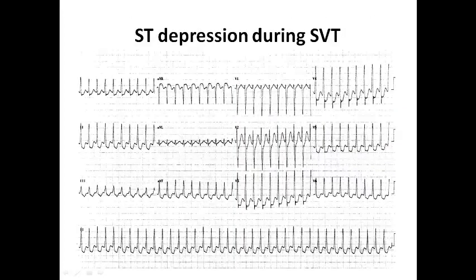Here we can see an ECG showing regular narrow complex tachycardia, consistent with SVT, and the heart rate is very high at about 180 or 190, as the RR interval is less than 2 large squares. We can see significant ST depression in chest leads from V2 to V6 plus the inferolateral leads, about 2 or 3 mm in some leads. There is also ST elevation in AVR, which is reciprocal to the ST depression, since AVR is in the right upper quadrant.